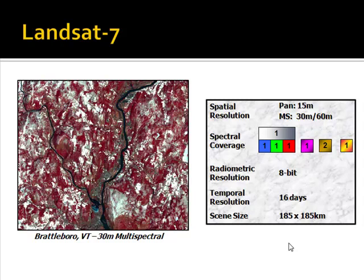Landsat was really the first commercial satellite, owned and operated by the U.S. government. The most recent, Landsat 7, has a panchromatic mode at 15 meters, a multi-spectral capability at 30 meters covering blue, green, red, near-infrared, and two short and mid-wave infrared bands, and a thermal capability at 60 meters. It's an 8-bit sensor that can revisit the same point on Earth every 16 days, with a considerably larger scene size of 185 by 185 kilometers.